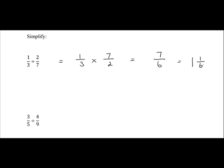The reason it's 1 and 1 sixth is 6 into 7 goes once, remainder 1. In the next example, 3 over 5 divided by 4 over 9. So again, we invert the fraction on the right and multiply. So 4 over 9 becomes 9 over 4.